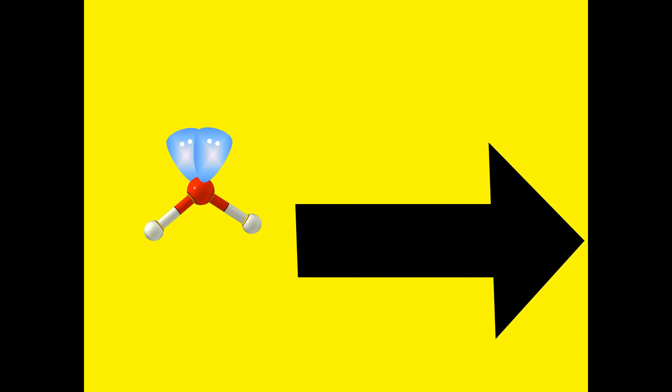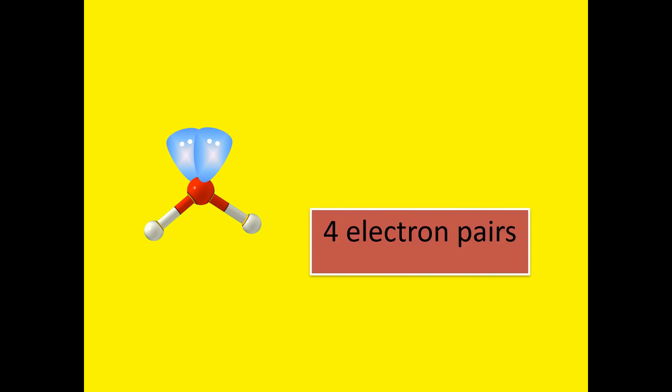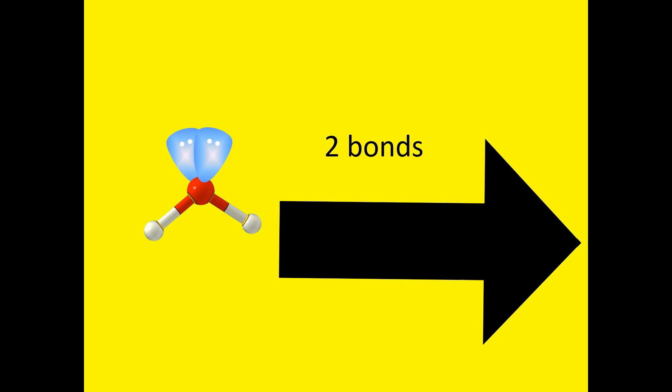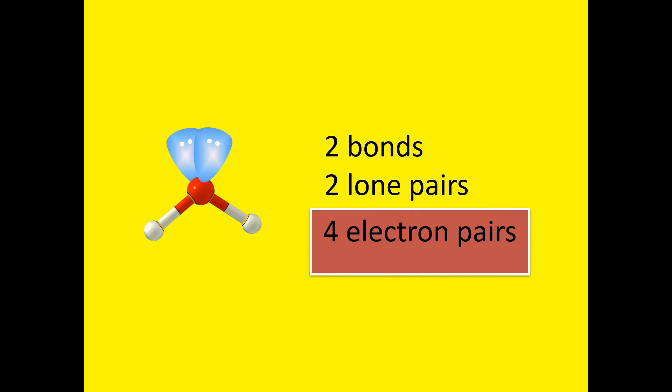Looking at the molecule, can you count the number of bonds and lone pairs formed? We have two bonds and two lone pairs formed, but they are all considered as electron pairs. And these are what we will use in shaping our molecule.